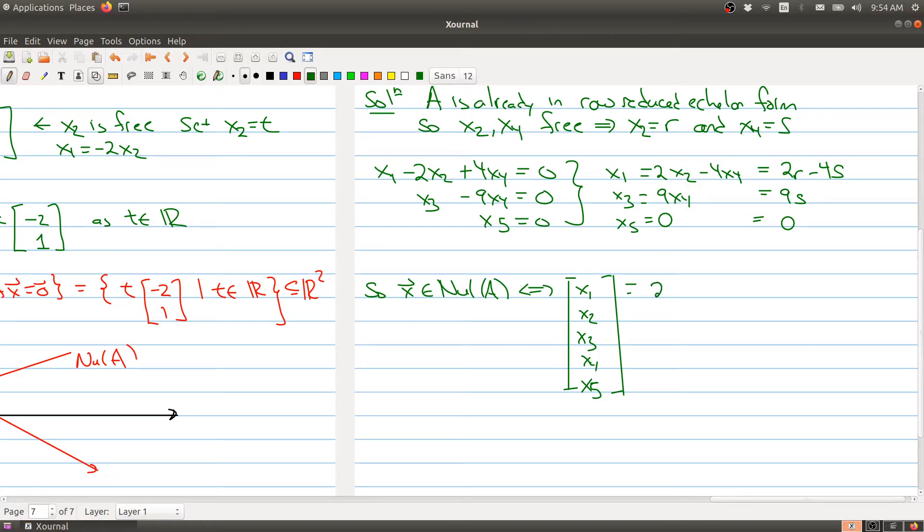The x1 is 2r minus 4s. The x2 is free, so that is R. x3 is 9s. x4 was our other free variable, which we had as S. And x5 was zero.